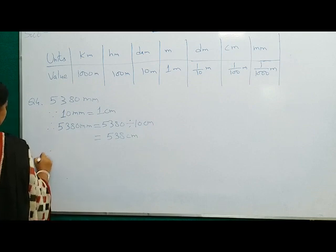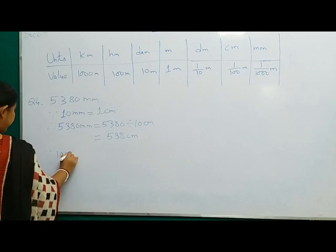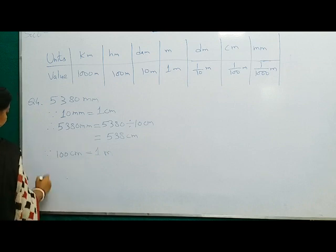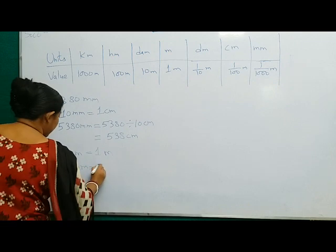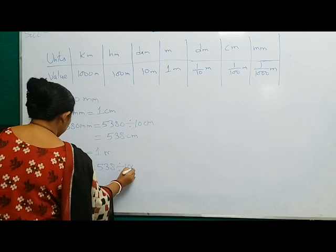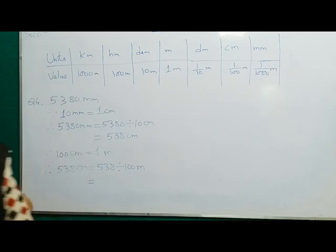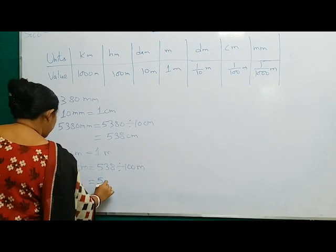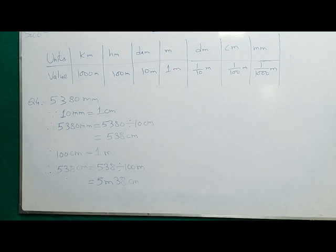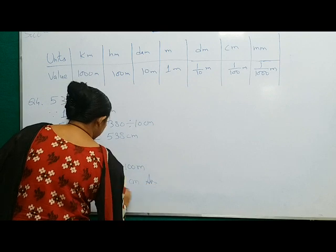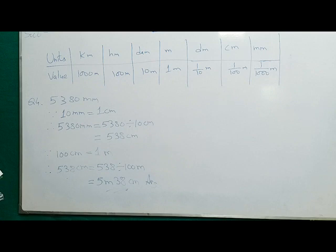Since 100 centimeters is equal to 1 meter, therefore 538 centimeters is equal to 538 divided by 100. It will be 5 meters and 38 centimeters, because 38 will be left as the remainder and the quotient will be 5. So the answer is 5 meters and 38 centimeters. We have successfully converted 5380 millimeters into meter and centimeter.